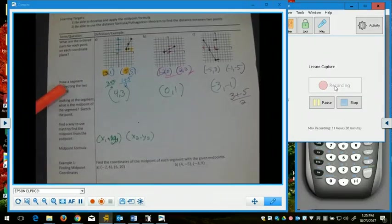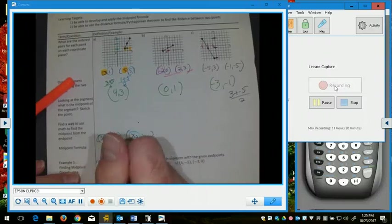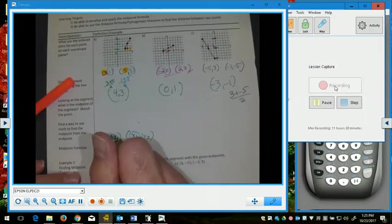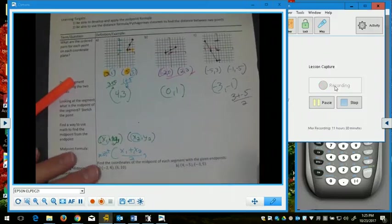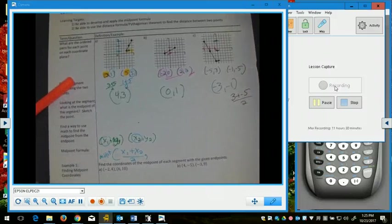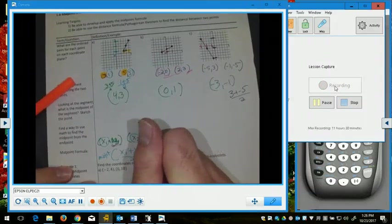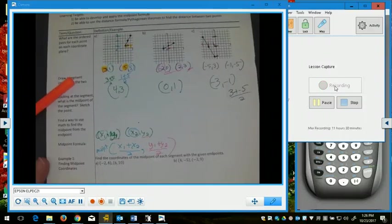we add our x's together and divide by 2 to get our x-coordinate of the midpoint. x sub 1 plus x sub 2 divided by 2. And we add our y's together and divide by 2 to get the y-coordinate of the midpoint. So, there is our midpoint formula.